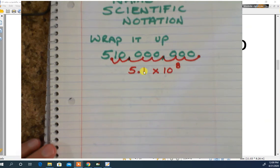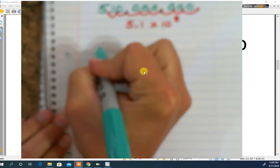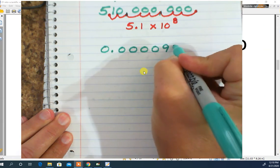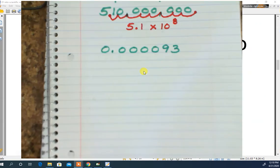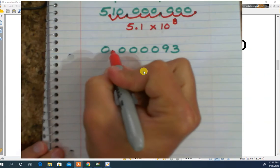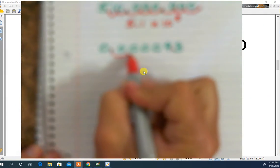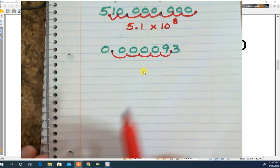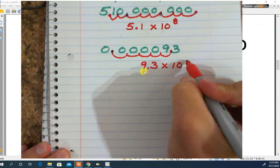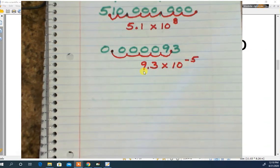Let's do some more wrapping. This time, let's go with 0.000093. We're going to wrap this up. I find my decimal. It's right there. I want to move it right here. 1, 2, 3, 4, 5. 9.3 times 10 to the negative 5. Negative because it's a small number.